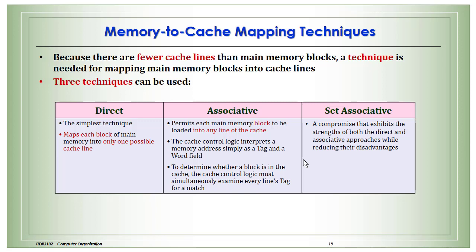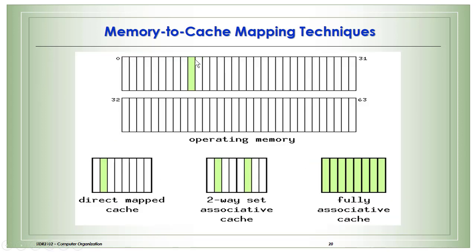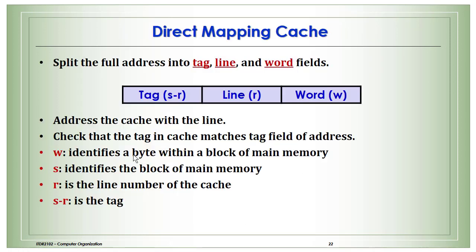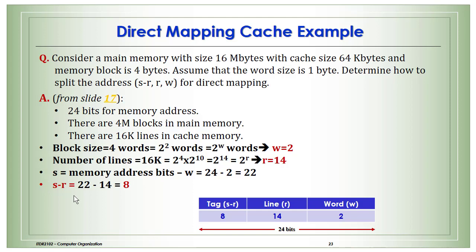In direct mapping, a memory block can only be loaded into one specific cache line. In two-way set associative, it can go into two lines; in full associative, into any line. When the CPU reads data using direct mapping, the memory address is split into three parts: tag (s minus r bits), line (r bits, identifying the cache line number), and word (w bits, identifying a byte within a block).